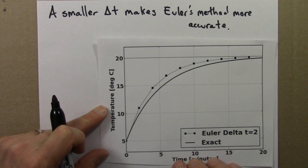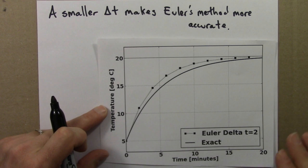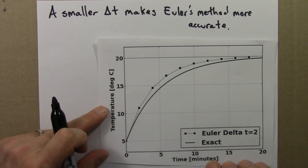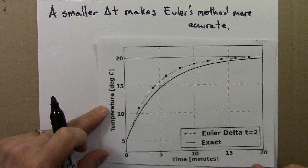But the rate will change less if the time interval is smaller. So if the time interval is 1 minute instead of 2, the bit of make-believe where we pretend that the rate isn't changing will be closer to reality.